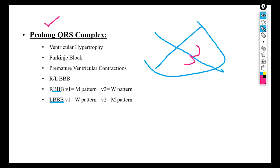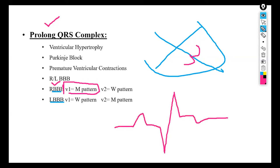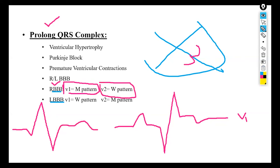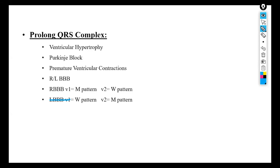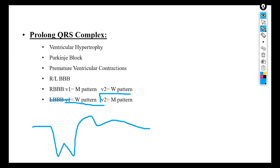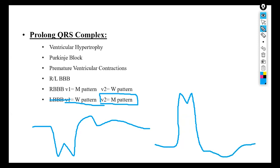In right bundle branch block, lead V1 gives an M-shaped pattern and lead V5/V6 gives a W-shaped pattern — you can remember this using the mnemonic 'William' (W in V1, M in V6... actually: in right bundle branch block V1 shows M and V2/V5 shows W). In left bundle branch block, lead V1 gives a W-shaped pattern and lead V2 gives an M-shaped pattern. These distinctive waveform patterns help identify which bundle branch is blocked.